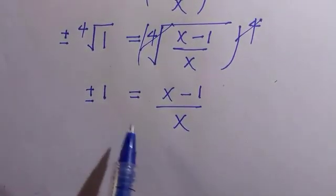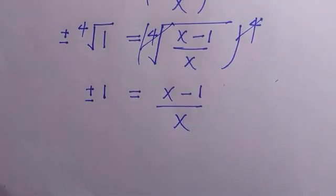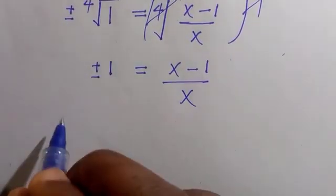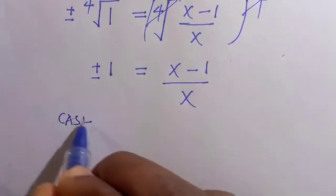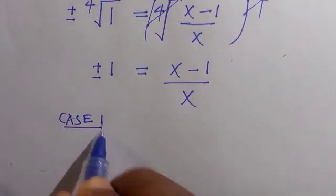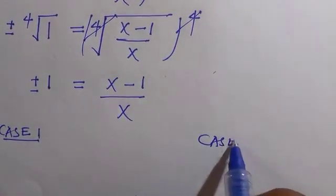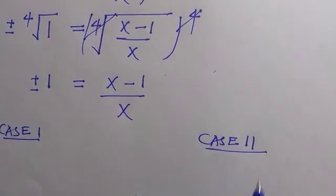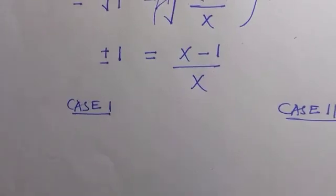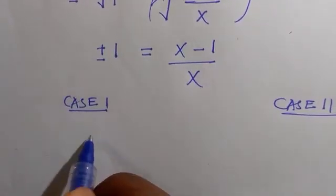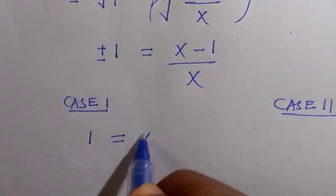So there are two cases for this. Either we consider the first case, which is case 1, or we have case 2. Either we have 1 equals (x minus 1) over x, or minus 1 equals (x minus 1) over x.